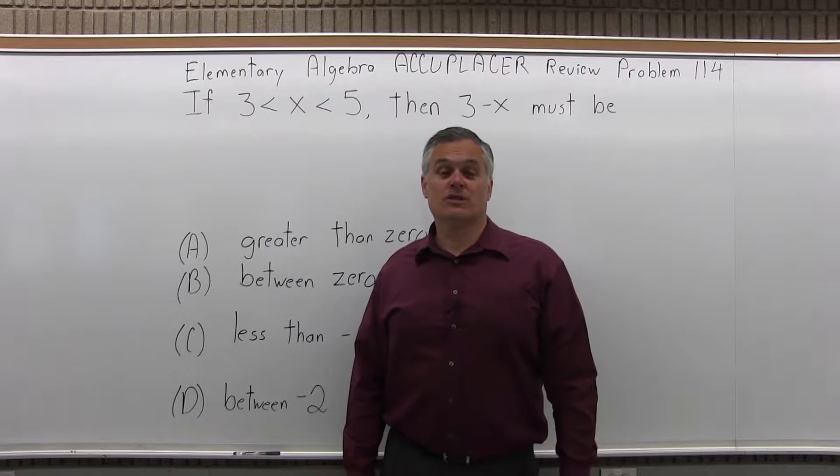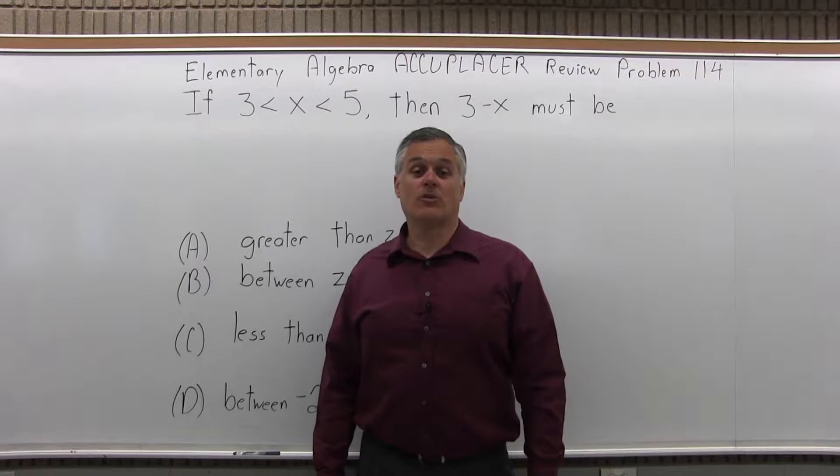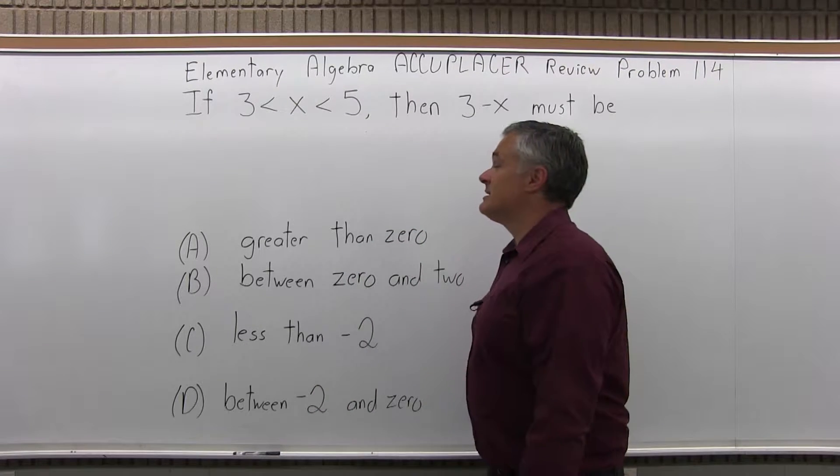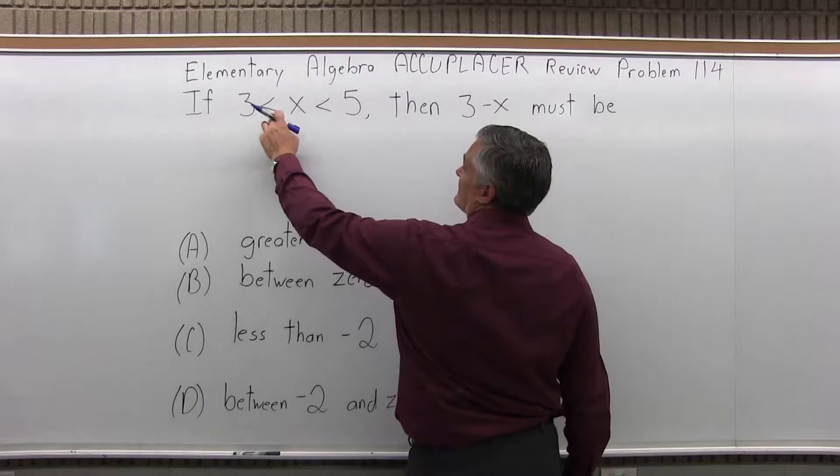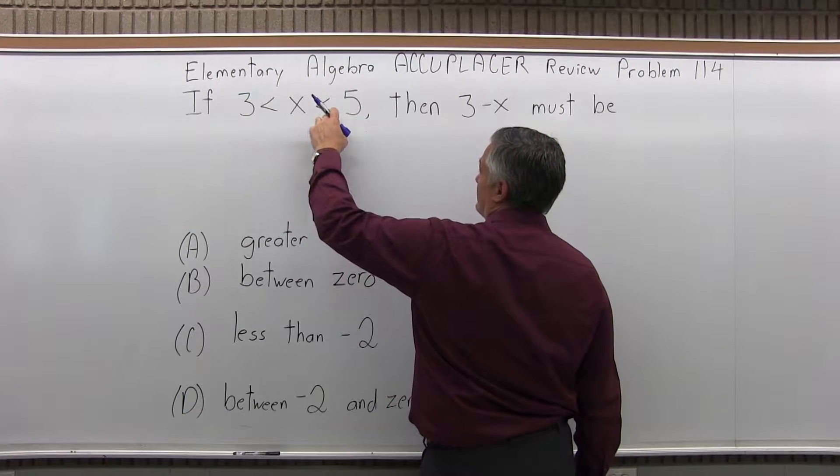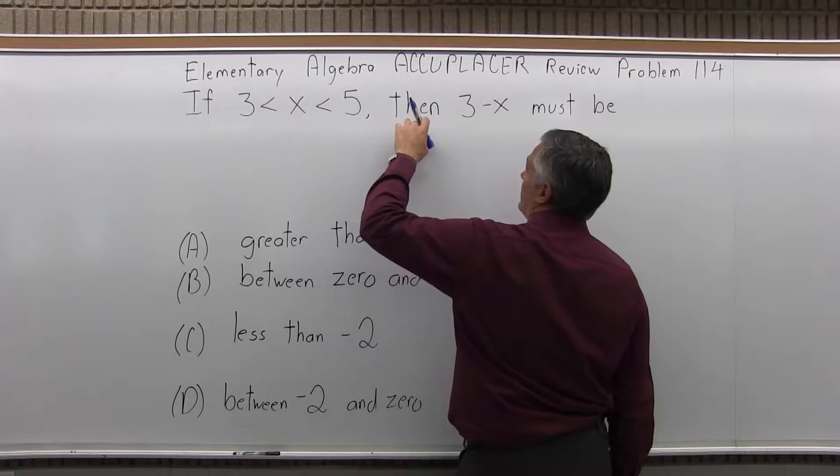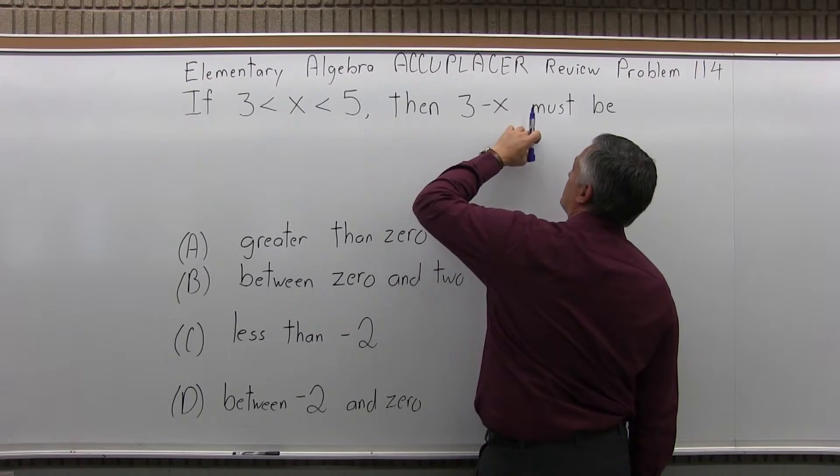This is the Elementary Algebra Accuplacer Review, Problem 114. It says, if 3 is less than x is less than 5, then 3 minus x must be...